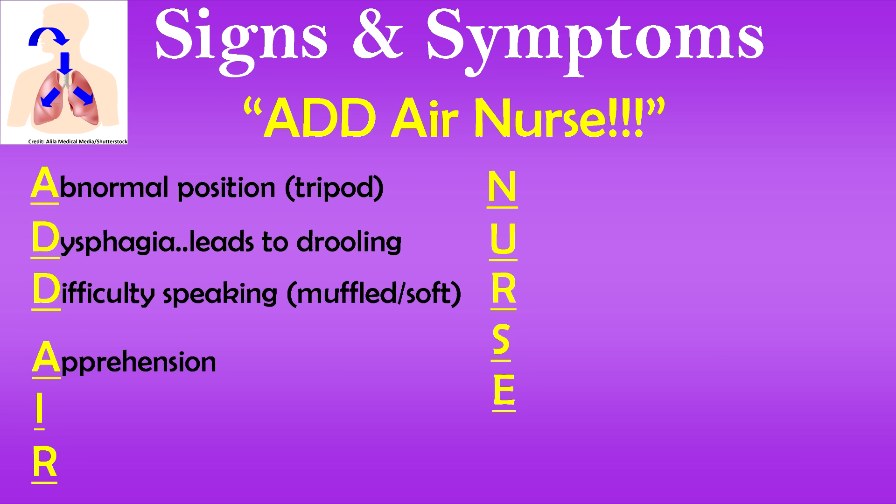A is for apprehension — the patient may be irritable and have anxiety. Their oxygen levels can be low, causing agitation and apprehension simply because they can't breathe, and it's a scary situation. I is for increased temperature — their temperature is going to be high, not a low-grade fever.